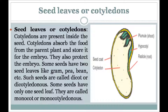Our next part is cotyledons or endosperm. Under the seed coat is the endosperm, which occupies the maximum part of a seed. It stores food for the baby plant. The baby plant uses this food until it grows its own roots and leaves. We also eat the cotyledons of many seeds, like all nuts.